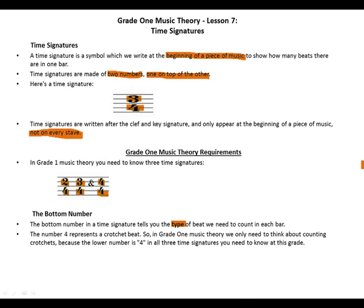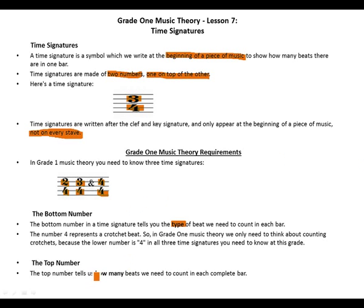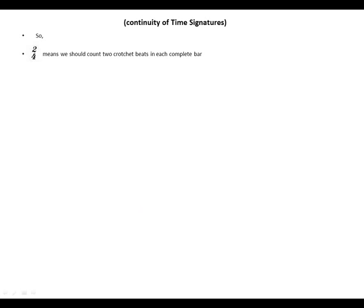The top number tells us how many beats we need to count in each complete bar. So 2/4 means we count two crotchets in each complete bar. 3/4 means we count three crotchet beats. And 4/4 means we count four crotchet beats in each bar.